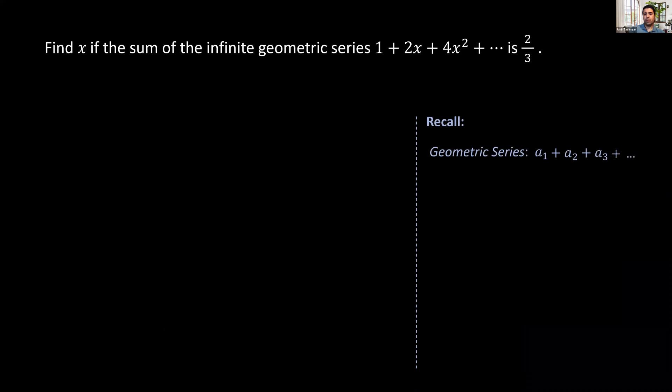Recall that in geometric series, the ratio of two consecutive terms is equal to a constant called the common ratio, represented by r. We can find the common ratio by setting up the ratio of two consecutive terms, for example, a2 over a1, or a3 over a2, and so on.